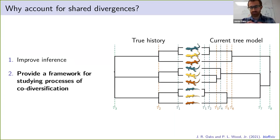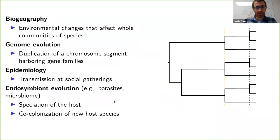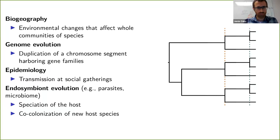But what I'm more interested in is that by accommodating shared divergences in phylogenetic inference, we can create a general statistical framework for being able to test patterns predicted by interesting processes of diversification. Our current assumption of independent divergences doesn't allow us to do that — that's the problem we want to solve.